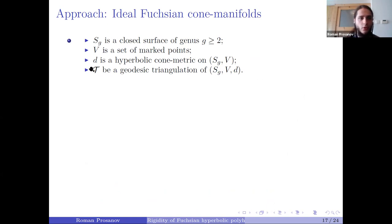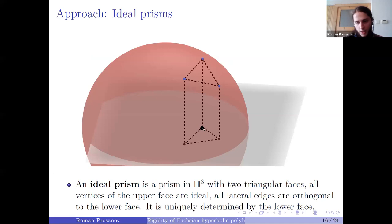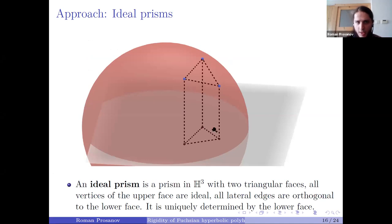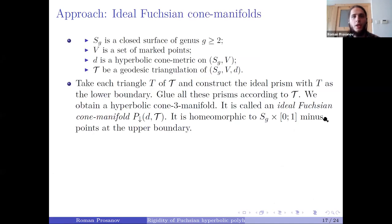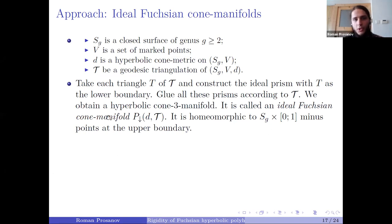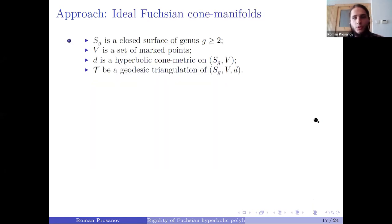I take the following data: a closed surface of genus greater than one, a finite set of marked points on the surface, and a hyperbolic con metric on this data with a geodesic triangulation. For each triangle I construct the ideal prism having that triangle as its lower boundary, then glue all the obtained prisms according to this triangulation. The result is a three-dimensional complex — a hyperbolic cone manifold — called an ideal Fuchsian cone manifold, homeomorphic to the surface times a segment minus the vertices at the upper boundary, since those belong to the boundary at infinity.